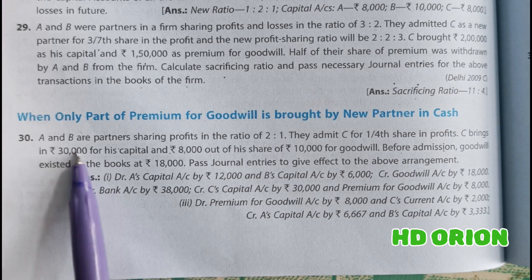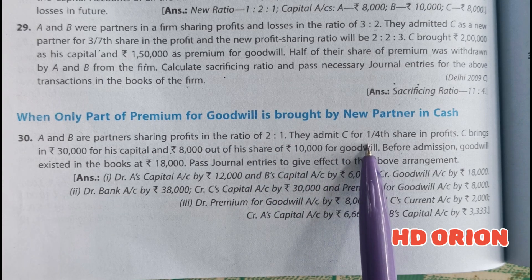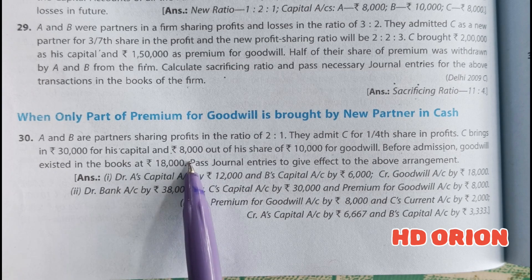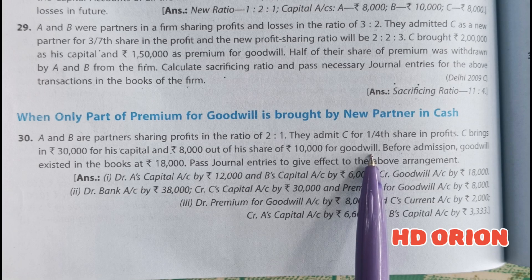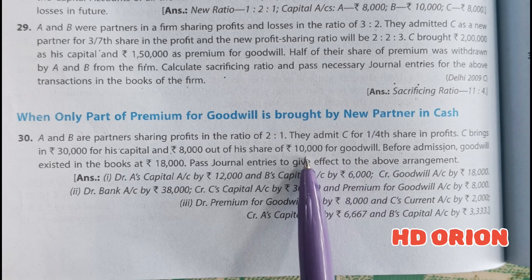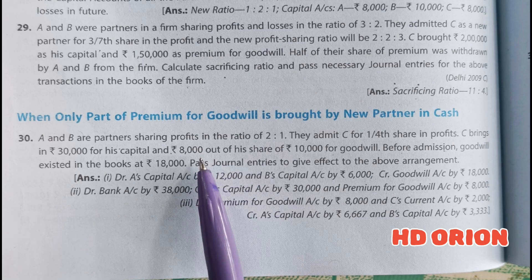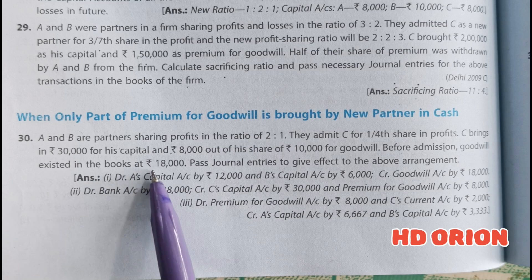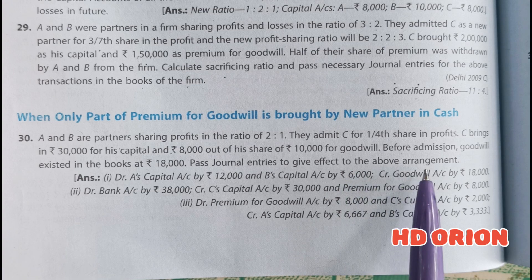Question number 30: A and B are partners sharing profits in the ratio of 2:1. They admit C for one-fourth share in the profits. C brings Rs. 30,000 for his capital and Rs. 8,000 out of his share of Rs. 10,000 for goodwill. Rs. 2,000 is not brought in cash by C. Before admission, goodwill existed in the books at Rs. 18,000. Pass journal entries to give effect to the above transactions.